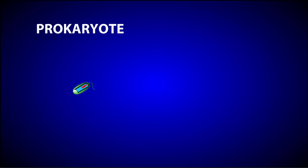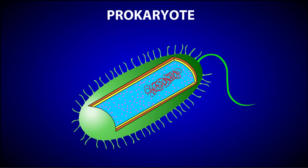If you were to look inside a prokaryotic cell, you would probably be surprised at how simple it is. For example, prokaryotic cells lack a nucleus. In fact, the name prokaryote actually gives you a hint about its structure. 'Karyo' means kernel or nucleus and 'pro' means before. So basically the word prokaryote means 'before nucleus.'